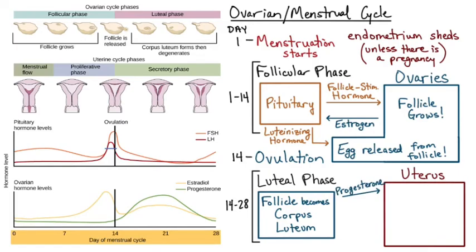Progesterone tells the endometrium in the uterus to keep growing and not to menstruate. Essentially it signals: we could still have a pregnancy, we need you to be ready — keep growing the endometrium. We can see the endometrium growing much thicker here in the second half of the ovarian cycle as that progesterone keeps getting released.